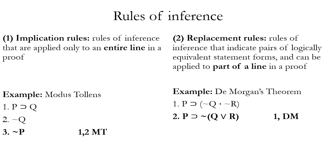DeMorgan's theorem allows you to move from a conjunction of negations — such as the consequent tilde Q dot tilde R in the conditional P horseshoe (tilde Q dot tilde R) — to a negated disjunction, in this case tilde (Q wedge R). So we've applied DeMorgan's theorem just on the consequent of that conditional, something we can do with a replacement rule but not with an implication rule.